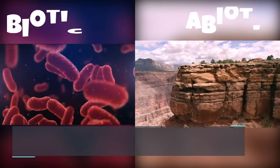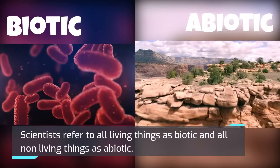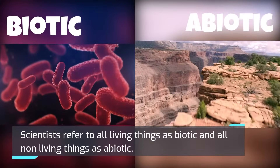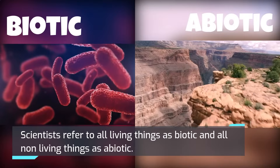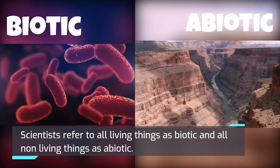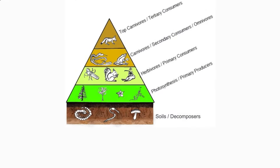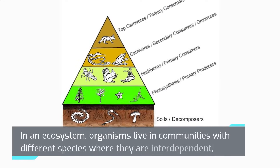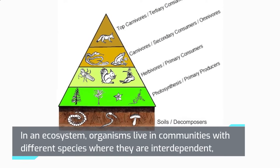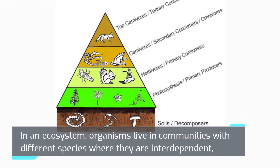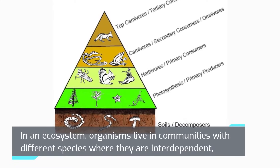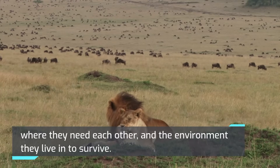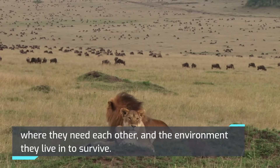Scientists refer to all living things as biotic and all non-living things as abiotic. In an ecosystem, organisms live in communities with different species where they are interdependent — where they need each other and the environment they live in to survive.